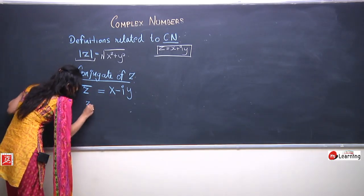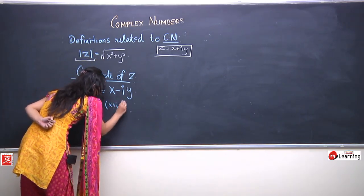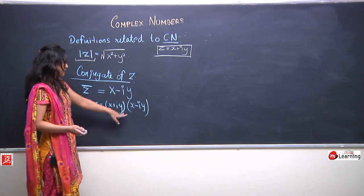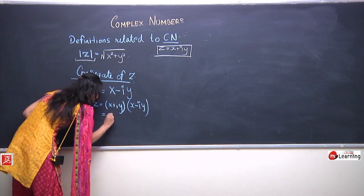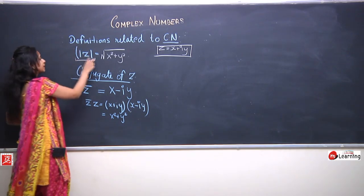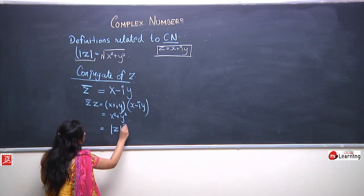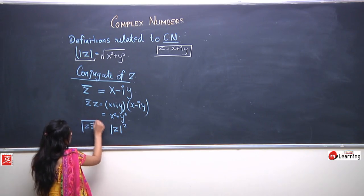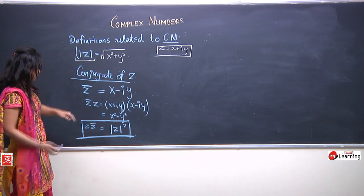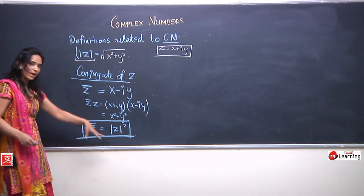Now let us see what we get when we multiply z by z̄. This equals (x + iy)(x − iy). We already discussed this as a special case of complex number multiplication. Expanding gives x² + y², and since |z| = √(x² + y²), this equals |z|². So, the multiplication of a complex number by its conjugate gives the square of its modulus.